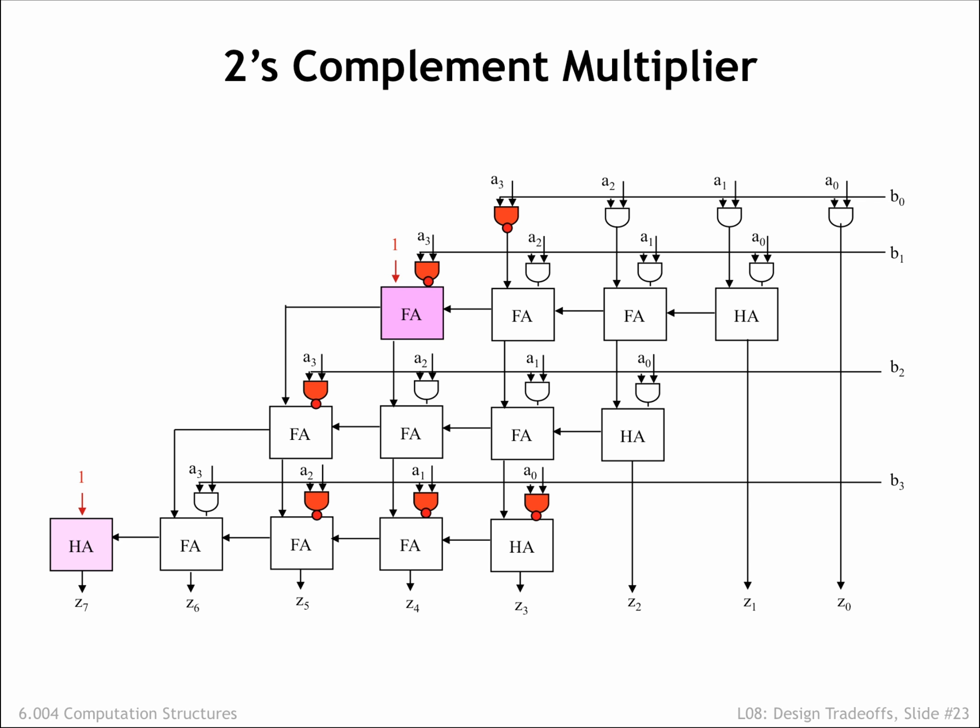The colored elements show the changes made from the original unsigned multiplier circuitry. Basically, the circuit for multiplying two's complement operands has the same latency, throughput, and hardware costs as the original circuitry.